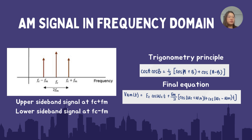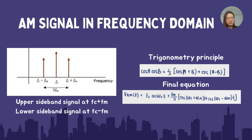From the graph, you will notice that there are actually three components on the axis: one is fc, fc minus fm, and fc plus fm. The bandwidth is actually 2fm. The upper sideband signal is at fc plus fm, and the lower sideband signal is at fc minus fm.